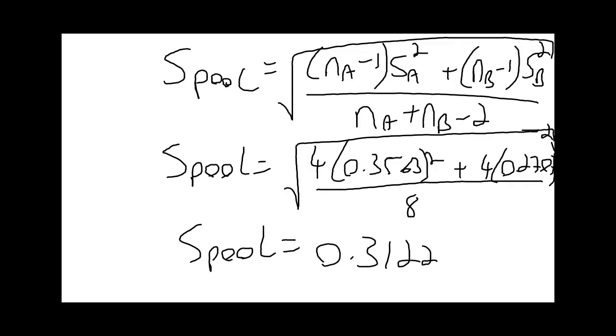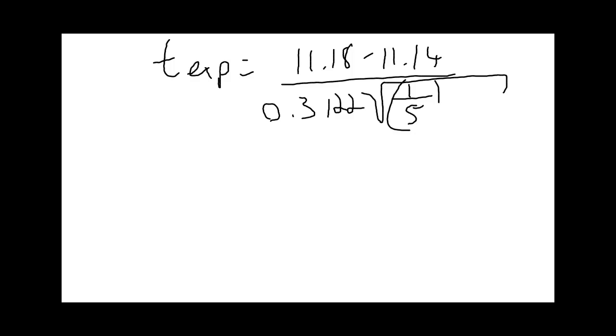Now we can plug everything into our calculation for the experimental t. That's 11.18 minus 11.14, divided by the pooled standard deviation 0.3122, multiplied by the square root of 1 over 5 plus 1 over 5. Calculating that out, we get a value of 0.203.